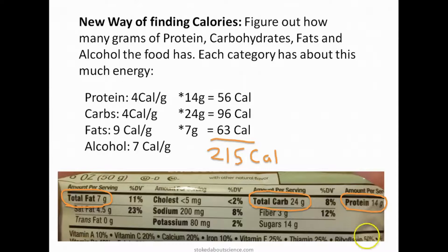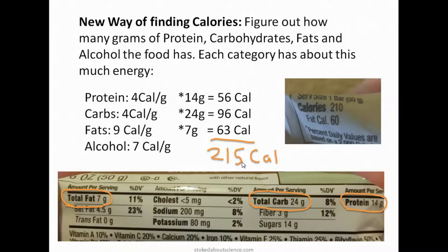These amounts are rounded so they're not exact — they should actually be decimals — so this isn't going to be exactly right, but it should be close. Looking at the wrapper, it says 210 calories, so we are right in the ballpark using this method.